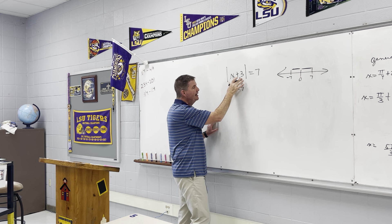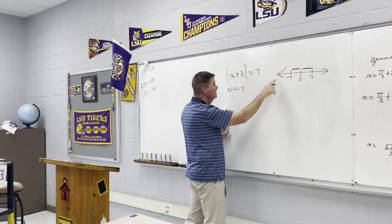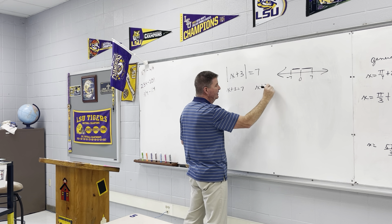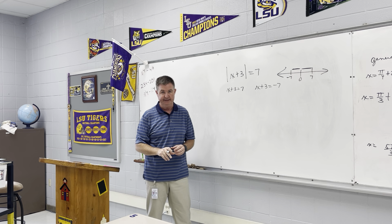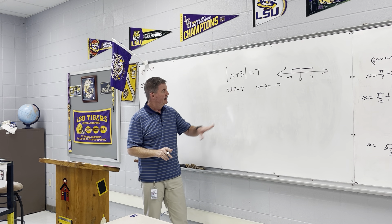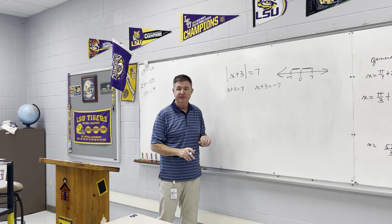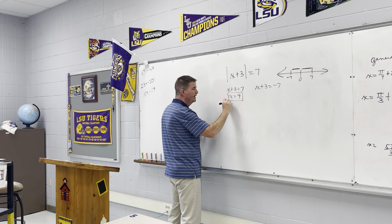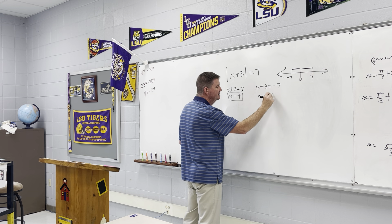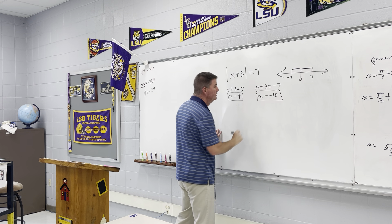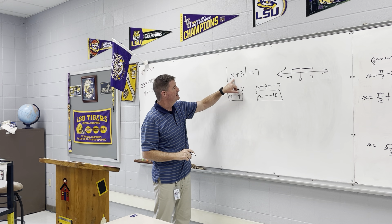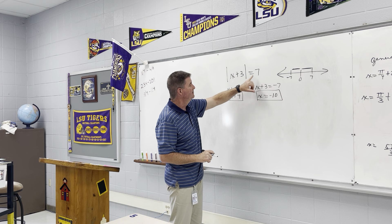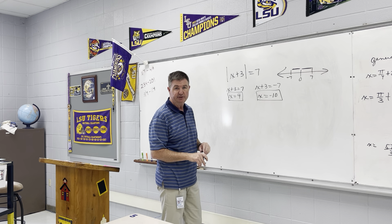When we drop the absolute values, it's also equal to the negative of that. So we write it as the negative of what we see: x plus 3 equals negative 7. Then we solve both. Subtract 3 from both sides: x equals 4, and x equals negative 10. Checking: 4 plus 3 is 7, and the absolute value of 7 is 7; or negative 10 plus 3 is negative 7, and the absolute value of negative 7 is also 7. So we come up with two answers.